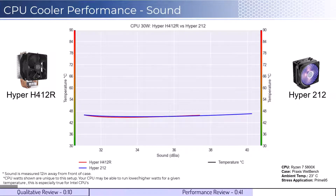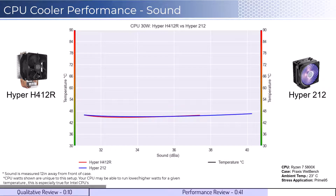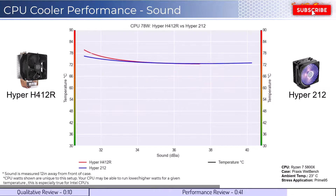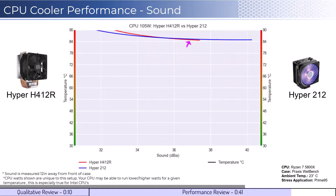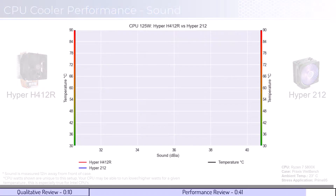We will look at the performance for a given noise level. The graph shown has noise on the bottom axis, while keeping the temperatures on the side axis. Note that lower is still better for this graph. When comparing the coolers by normalized noise levels, we see that both coolers perform similarly at idle temperatures for a given noise level. As we increase the wattage to 105, both perform similarly at higher decibels; however, the 212 performs slightly better at lower decibels. This trend continues as we move to 125 watts.